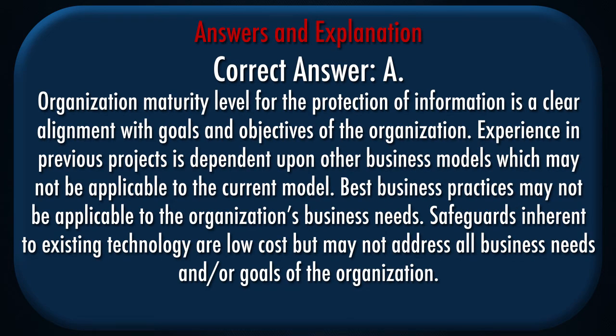Correct answer: A. Explanation: Organization maturity level for the protection of information is a clear alignment with goals and objectives of the organization. Experience in previous projects is dependent upon other business models which may not be applicable to the current model. Best business practices may not be applicable to the organization's business needs. Safeguards inherent in existing technology are low cost but may not address all business needs or goals of the organization.